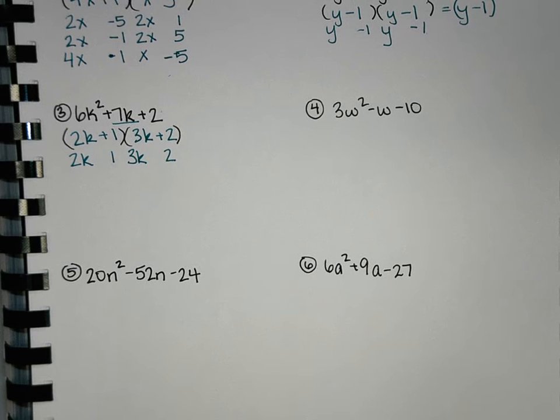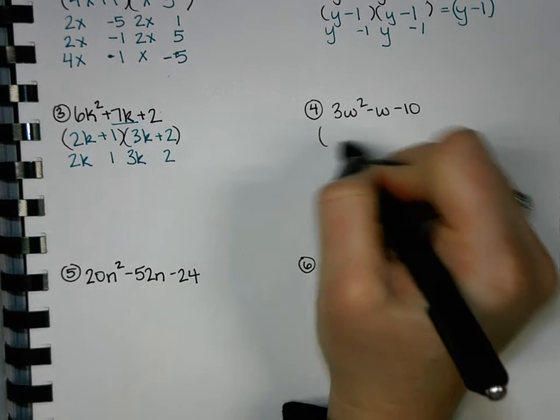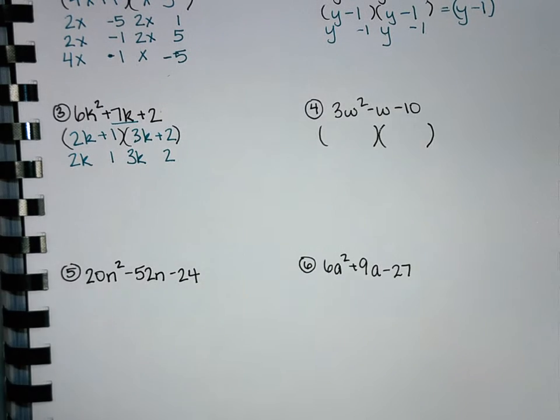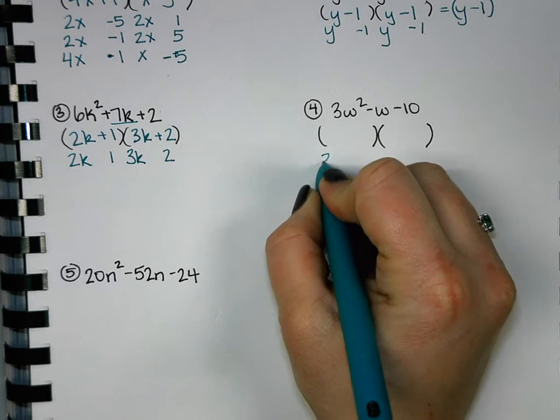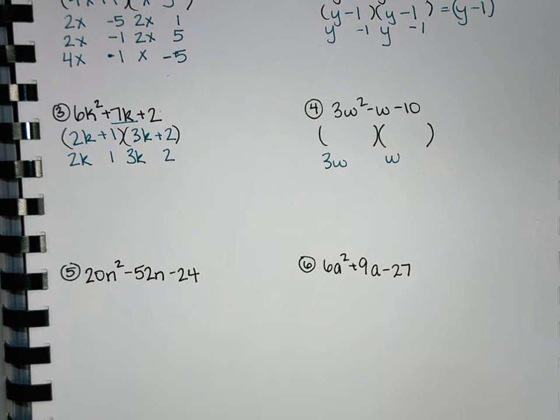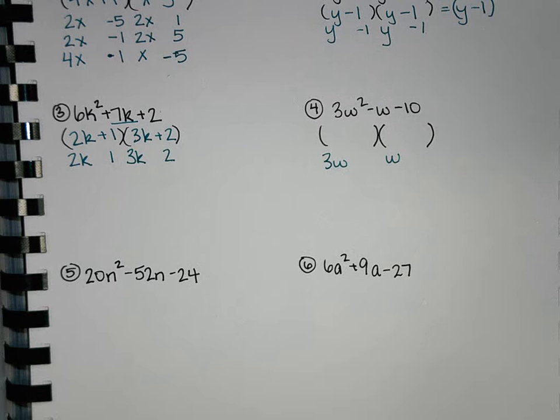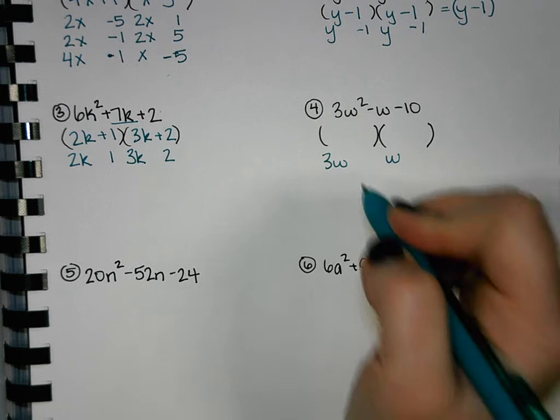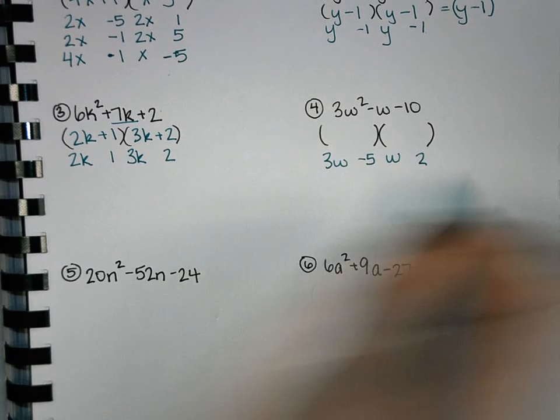What about number 4? Is there a GCF? No, nothing in common. Is it difference of squares? No. So that means we're going to do our trinomial factoring. So what are some things that multiply to 3w²? 3w and w. Now we need negative 10. So what are some things that multiply to negative 10? Negative 5 and 2. Any particular spots you want them? We can just put them somewhere and go from there.